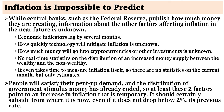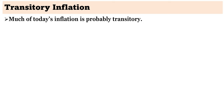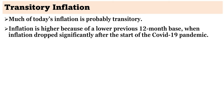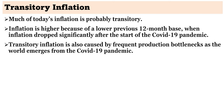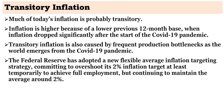People will satisfy their pent-up demand, and the distribution of government stimulus money has already ended, so at least these two factors point to an increase in inflation that is temporary. It should certainly subside from where it is now, even if it does not drop below its previous rate of 2%. Much of today's inflation is probably transitory. Inflation is higher now because of a lower previous 12-month base, when inflation dropped significantly after the start of the COVID-19 pandemic. Transitory inflation is also caused by frequent production bottlenecks as the world emerges from the COVID-19 pandemic. The Federal Reserve has adopted a new flexible average inflation strategy, committing to overshoot its 2% inflation target, at least temporarily, to achieve full employment, but continuing to maintain the average around 2%.